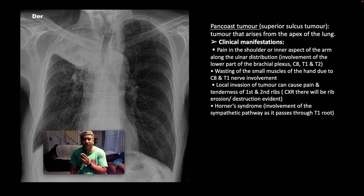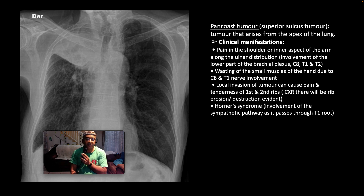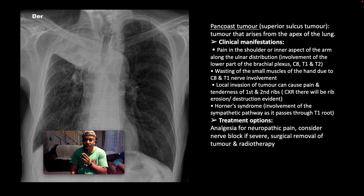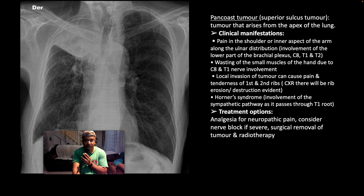Local invasion of the tumor can cause pain and tenderness of the first and second ribs, where you may see rib erosions and destruction evident on your chest X-ray. Horner's syndrome — which is involvement of the sympathetic pathway as it passes through the T1 nerve root — will give you typical ptosis, miosis, and anhidrosis of the affected side. Treatment options include analgesia for neuropathic pain, consider nerve block if severe, and of course surgical removal of the tumor with adjuvant radiotherapy.